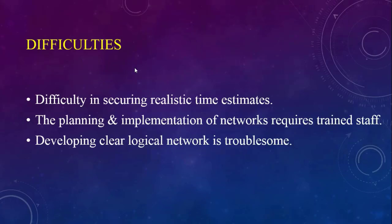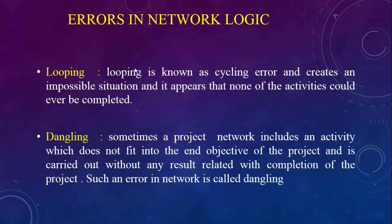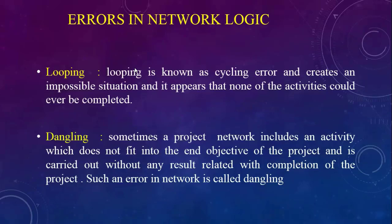Errors in network analysis include looping and dangling. Looping, known as a cycling error, creates an impossible situation where none of the activities can be completed — the network has a start and end but sometimes it is not possible to complete the project, which is called a looping error. Dangling occurs when a project network includes an activity that does not fit into the end objective of the project and is carried out without results related to project completion. Such errors also occur in network logic.